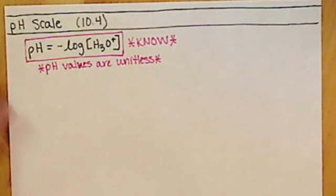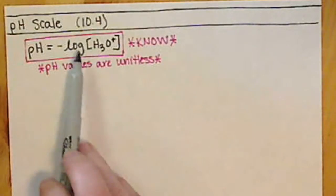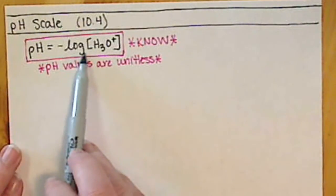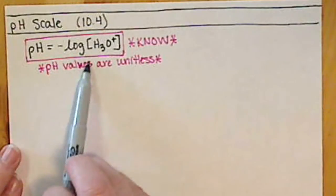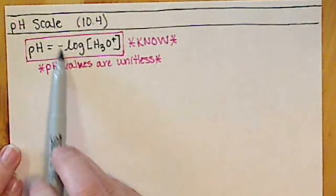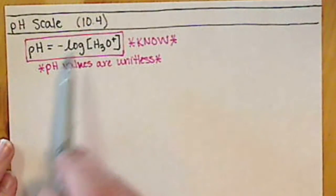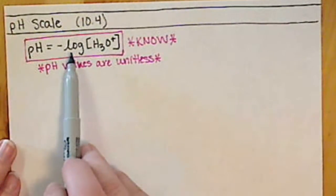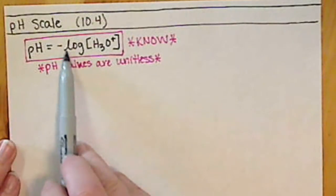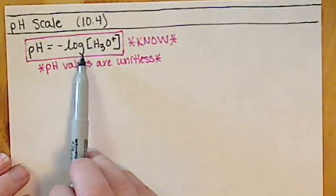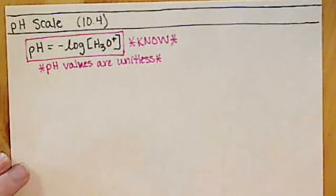Most of you do not know what a logarithm is, and hopefully you are not panicking. This is a mathematical operation called a logarithm. What it does is it takes really, really, really big numbers, or really, really, really small numbers, and puts them on a more manageable scale.